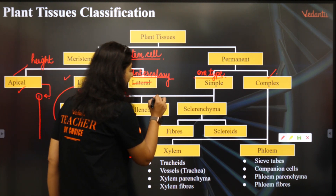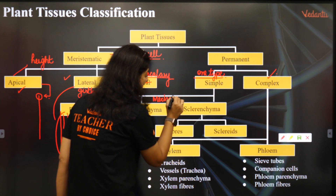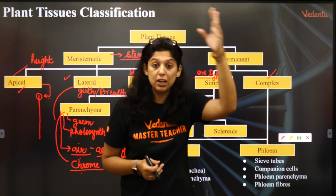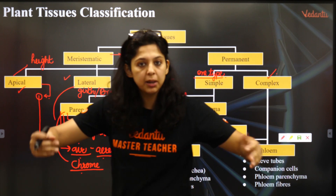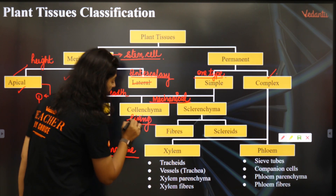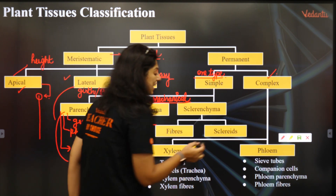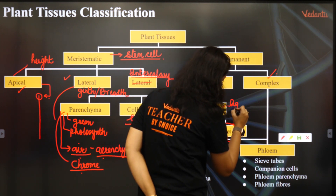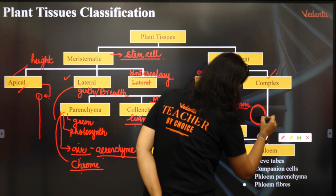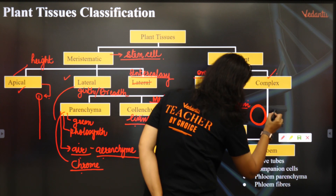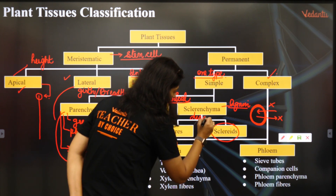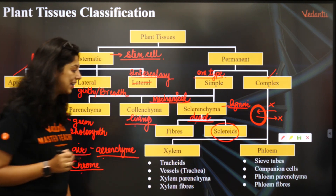Collenchyma and sclerenchyma are the mechanical tissues — that means they give strength. You've seen how in strong winds the trees sway but they don't fall down, so they have a lot of strength. The living mechanical tissue is called collenchyma — it has more pectin, cellulose, and hemicellulose. But because of sclerids and lignin, cells can become dead. If the cell wall is full of lignin deposit, then oxygen and water cannot come inside, nothing can come in, and waste material can't come out — it becomes a dead mechanical tissue. So a dead mechanical tissue is called sclerenchyma.